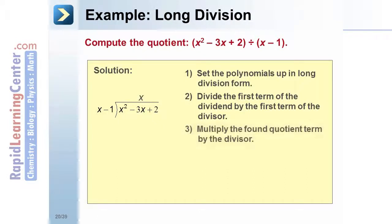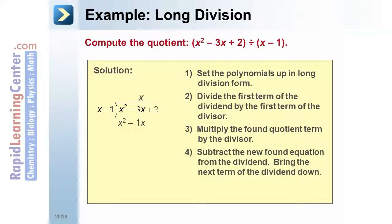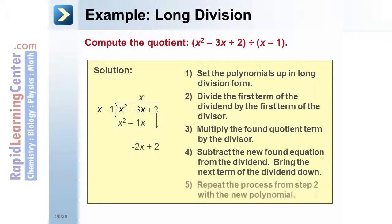Third, multiply the found quotient term x by the divisor to get x squared minus x. Fourth, subtract the new found polynomial from the dividend and bring the next term of the dividend down to get negative 2x plus 2. Fifth, repeat the process from step 2 with the new polynomial to get the final quotient, x minus 2.